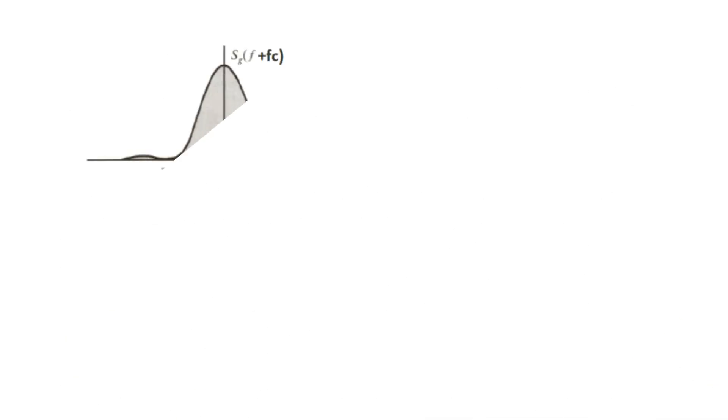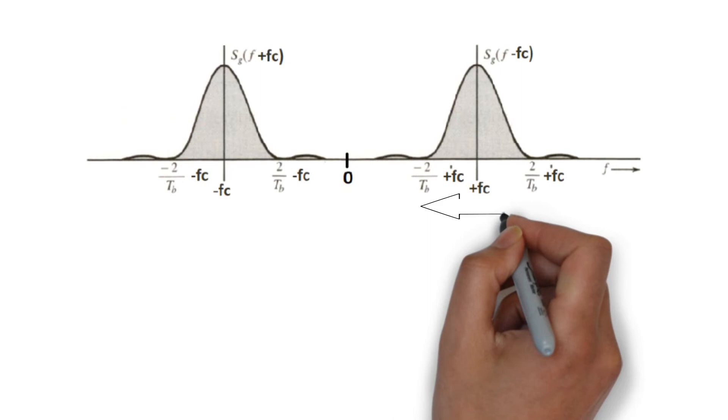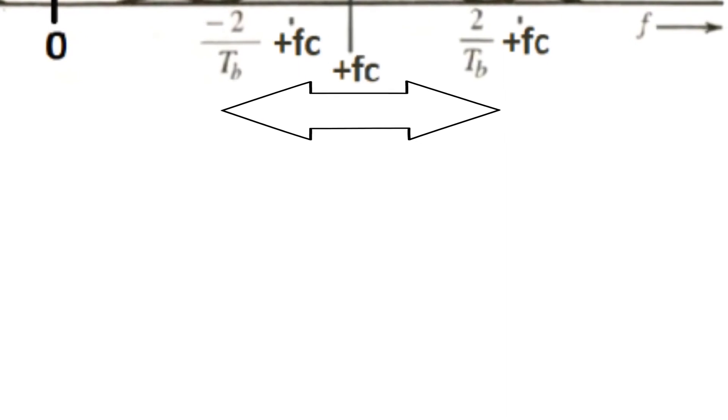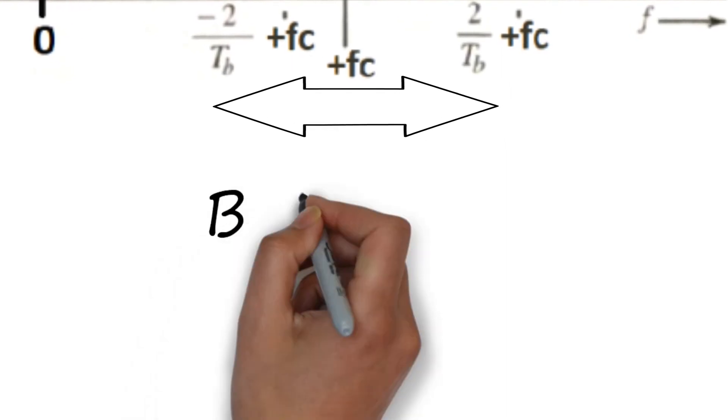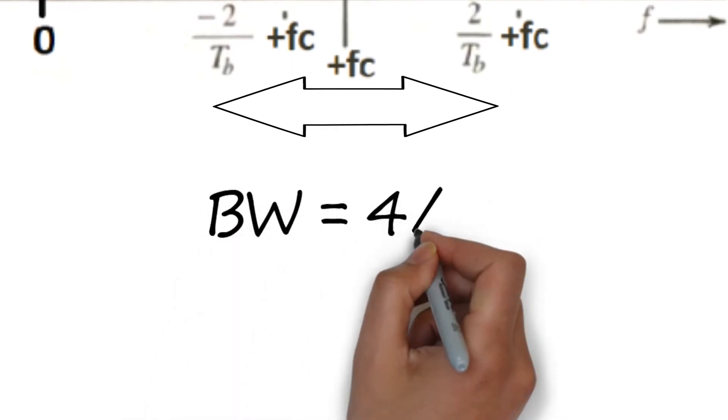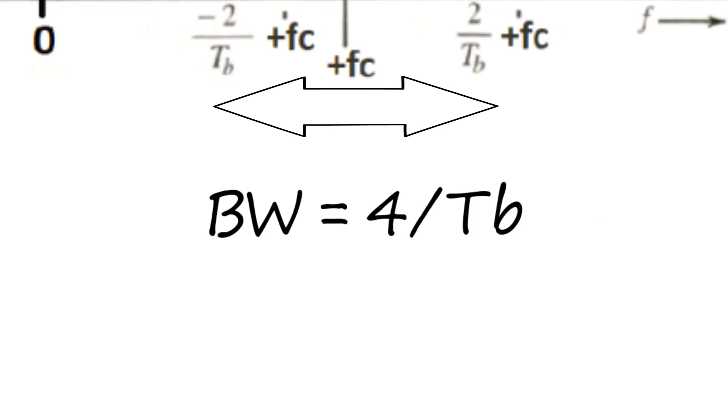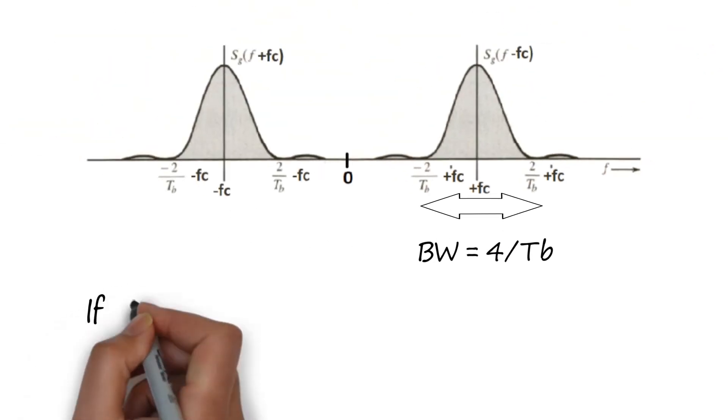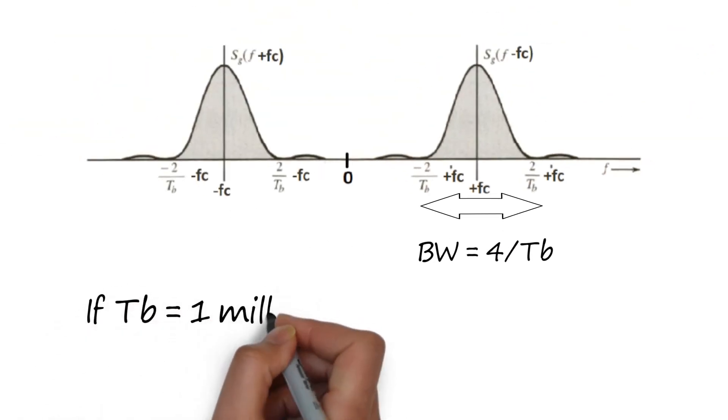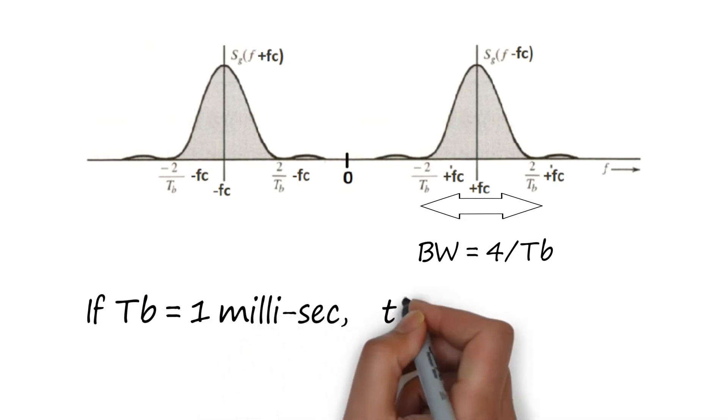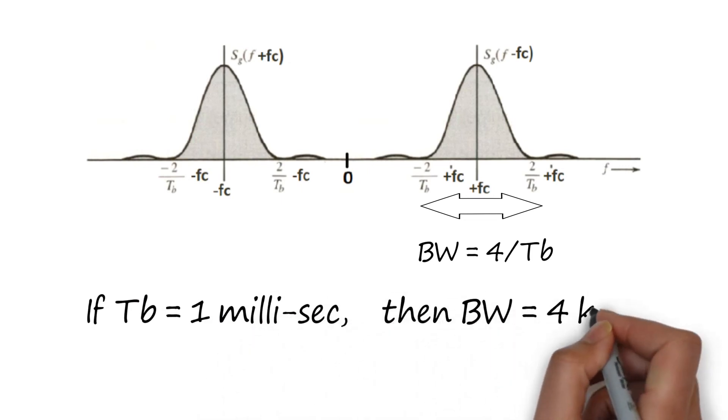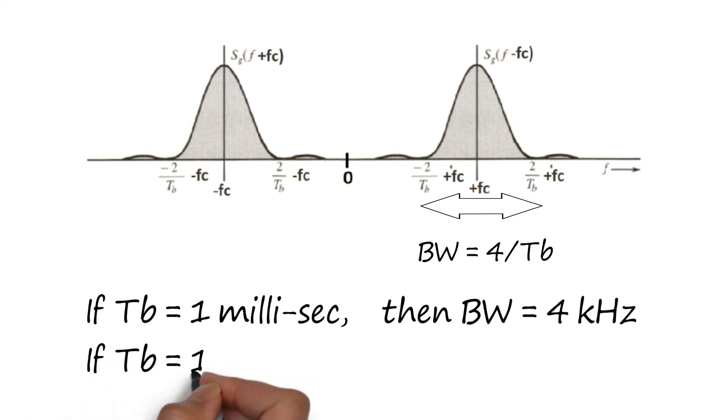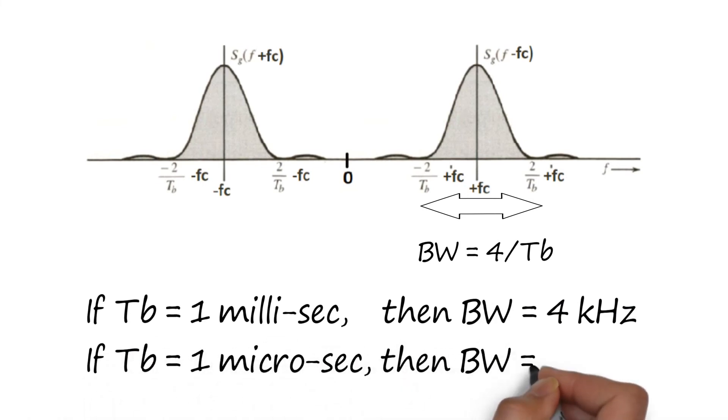The main lobe starts from fc - 2/TB and goes until fc + 2/TB, hence the modulated bandwidth is 4/TB hertz in our present case. For the time period of a bit set to 1 millisecond, the bandwidth would be 4 kilohertz, whereas if we set TB to 1 microsecond, the bandwidth would be 4 megahertz.